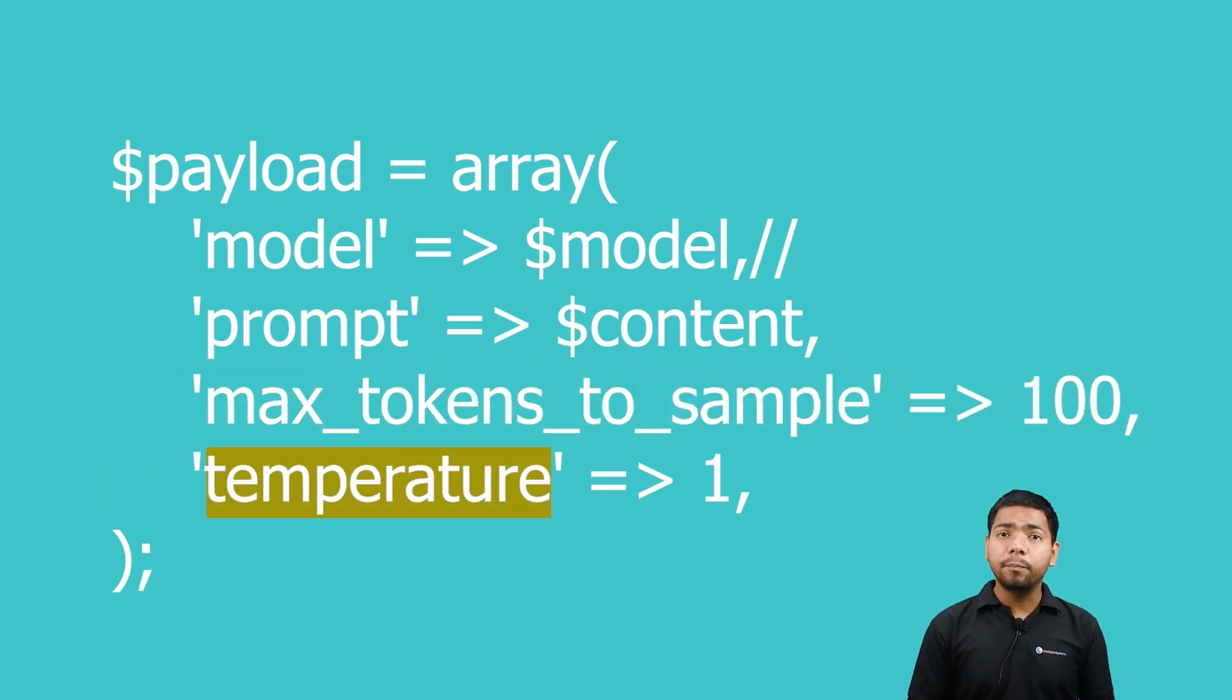The fourth main component of payload is temperature. This line sets the temperature key in the payload array to the value 1. The temperature parameter controls the randomness of the generated text. It can be set between 0 and 2.